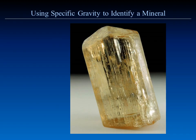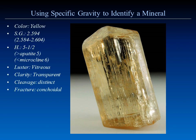Let's put this all together. We have a yellow crystal with a calculated specific gravity of 2.594. For searching purposes, we'll use a range of 2.584 to 2.604. A scratch test determined hardness of 5.5 — harder than apatite but softer than microcline. It has vitreous luster, is transparent, with distinct cleavage on the bottom face and conchoidal fracture on the edges.